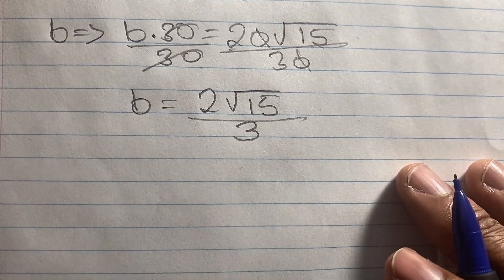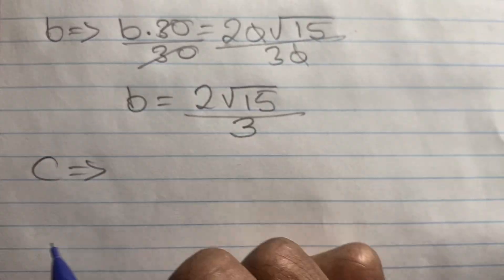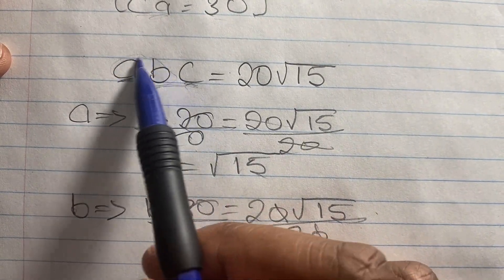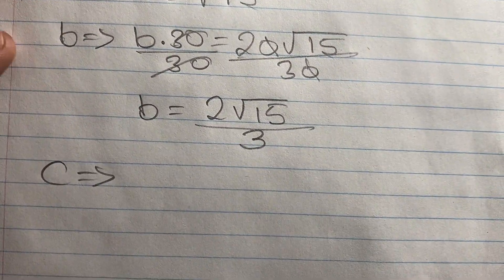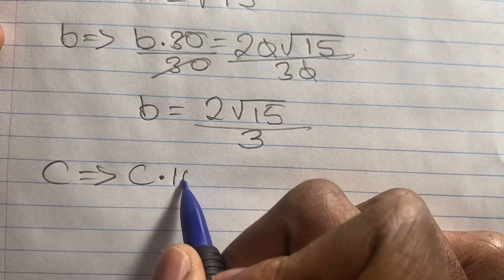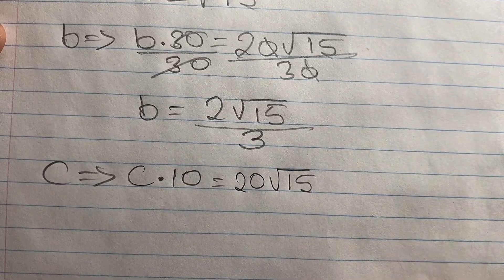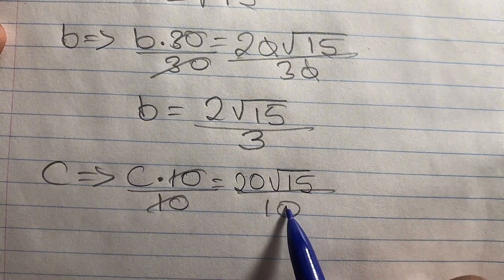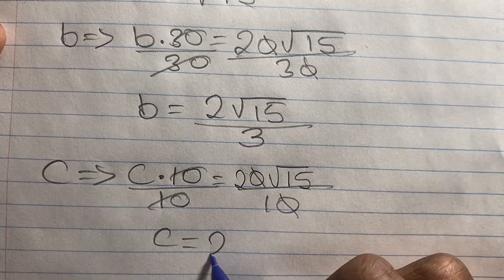Now in order to complete a plus b plus c, we need to find the value of c. To find c, we use equation 1, where ab equals 10. So c times 10 equals 20 root 15. Dividing both sides by 10 and cancelling the zeros, c equals 2 root 15.